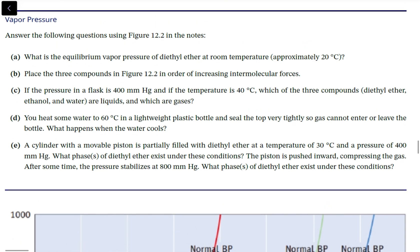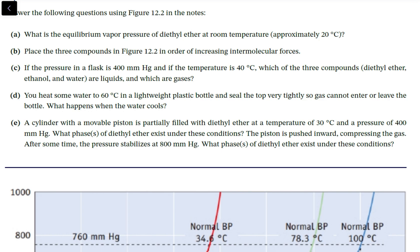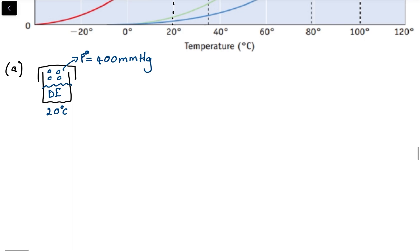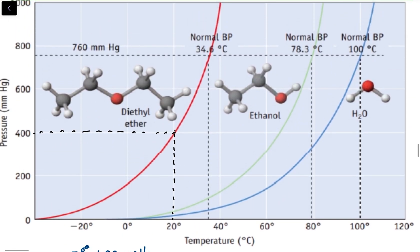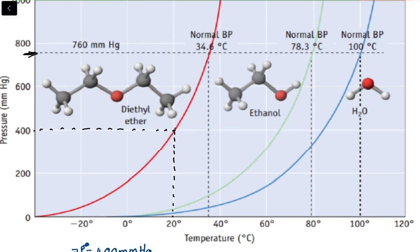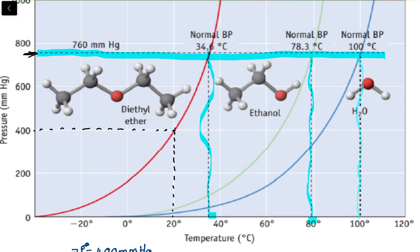Now, place the three compounds in order of increasing intermolecular forces. Increasing intermolecular force strength implies how much energy is required to make a substance undergo a phase change. Importantly, this graph tells us something about the boiling point — the temperature at which we reach 760 millimeter mercury. We see that for diethyl ether it is around 37 degrees Celsius, ethanol around 78 degrees Celsius, and water at 100 degrees Celsius.